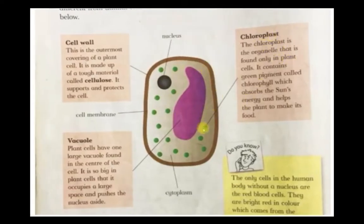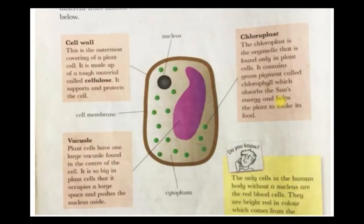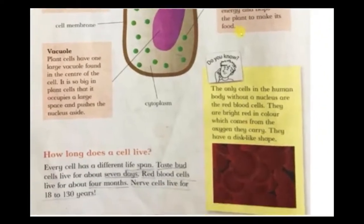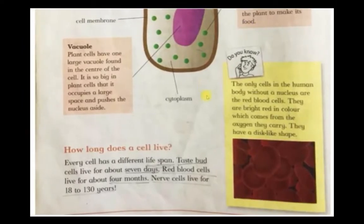Apart from that, one more thing found in the plant cell are the chloroplasts. Chloroplasts are organelles found only in plant cells. They contain a green pigment called chlorophyll, which absorbs the sun's energy and helps the plant to make its food. These are the basic differences between an animal cell and a plant cell.